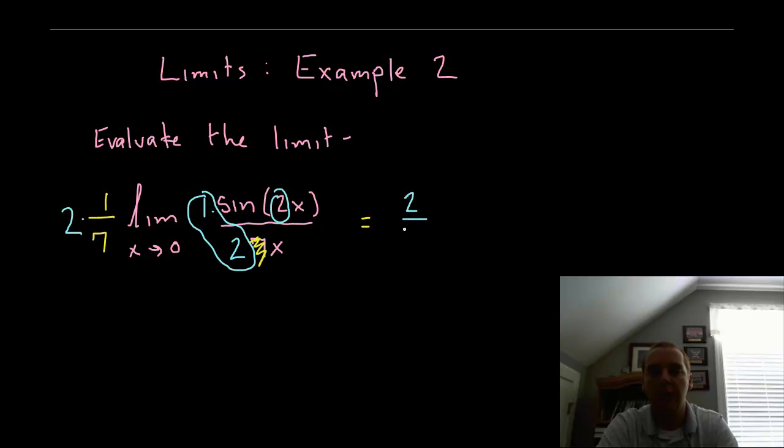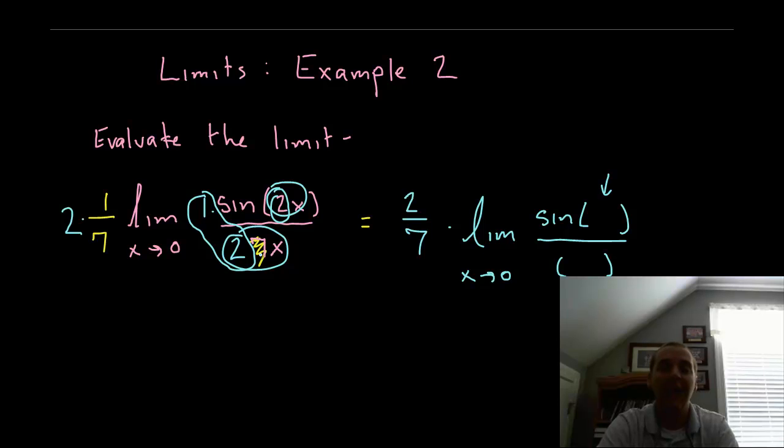Well now we would have two-sevenths times the limit as x approaches zero, for sine of blank over blank. Now the key is that these guys are the same. If what's inside the sine and what's in the denominator match, then as x goes to zero, they're both going to be going to zero, and they'll even be going to zero at the same rate.